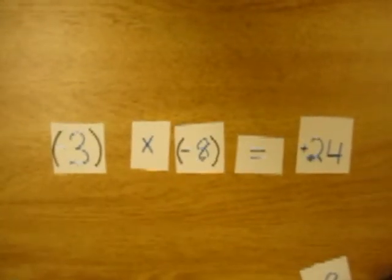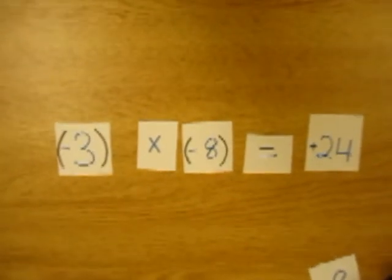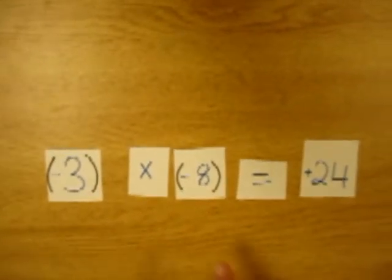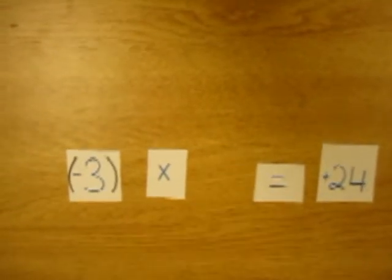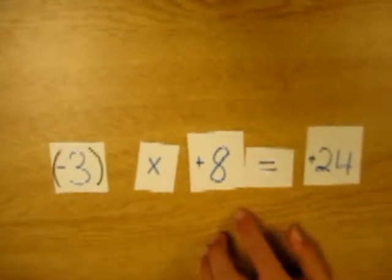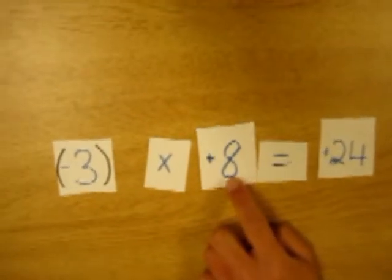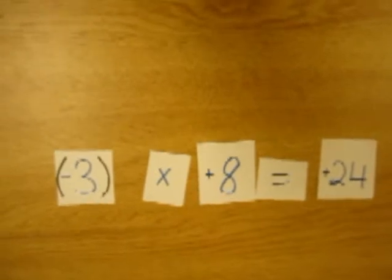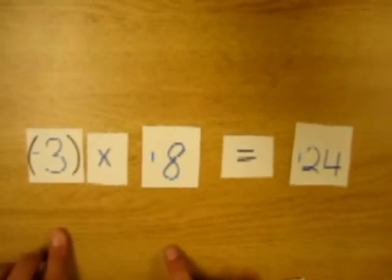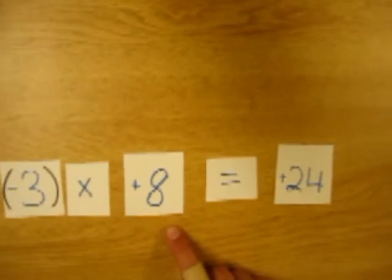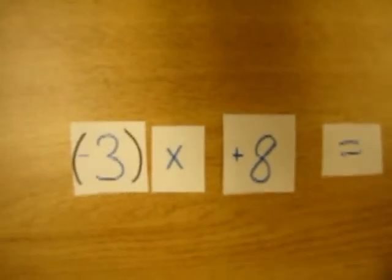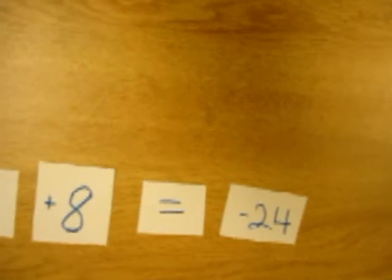What happens if there is one negative integer and one positive integer? If there is one negative integer and one positive integer, the negative sign won't be cancelled. Here's the trick: when you have one negative integer and one positive integer, the answer will always be negative. So negative 3 times positive 8 equals negative 24, not positive.